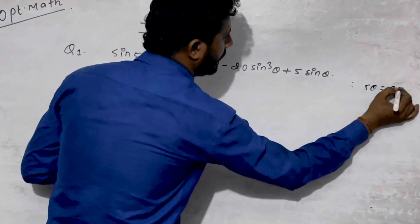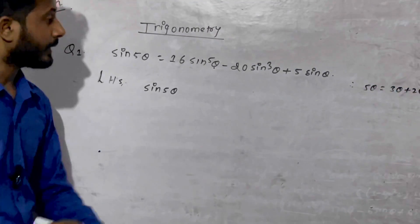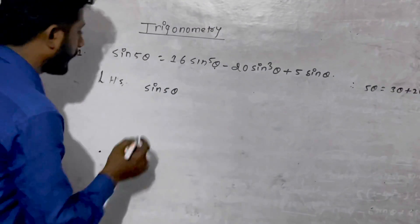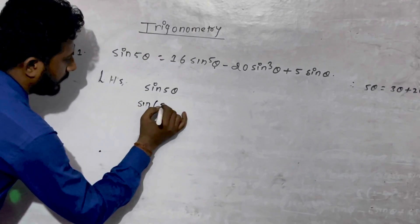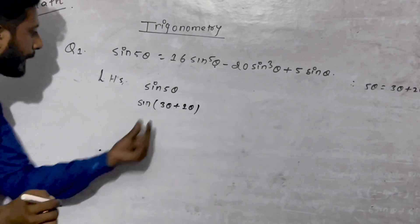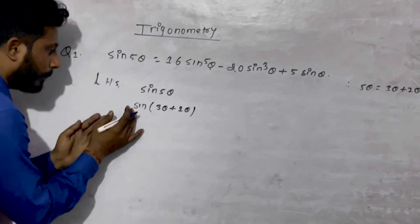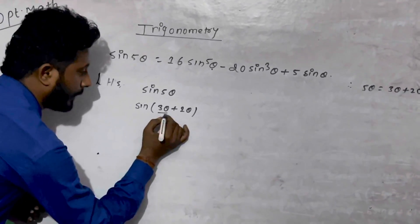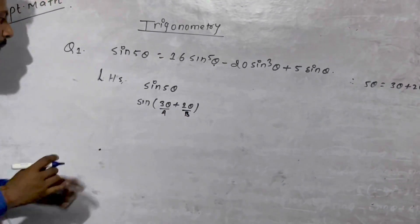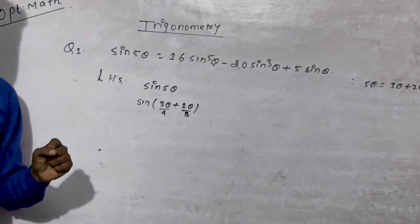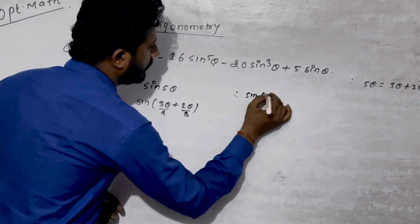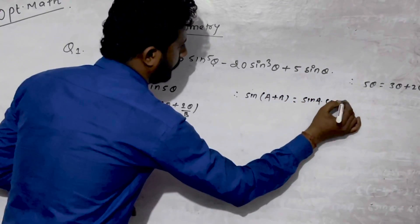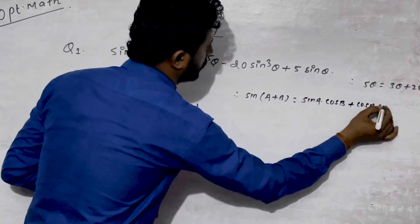We read the formula of sin(3θ + 2θ). We know sin(2θ + 3θ) expands as sin A into cos B plus cos A into sin B.